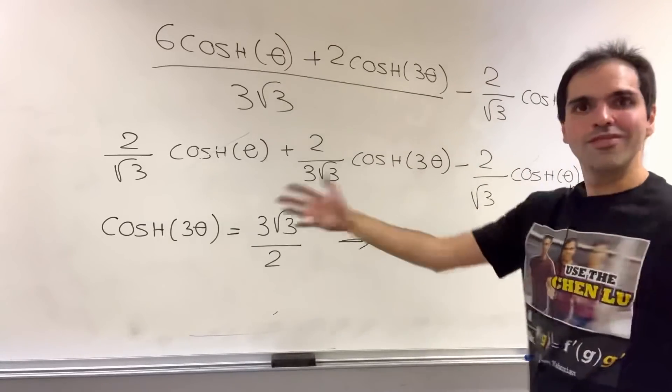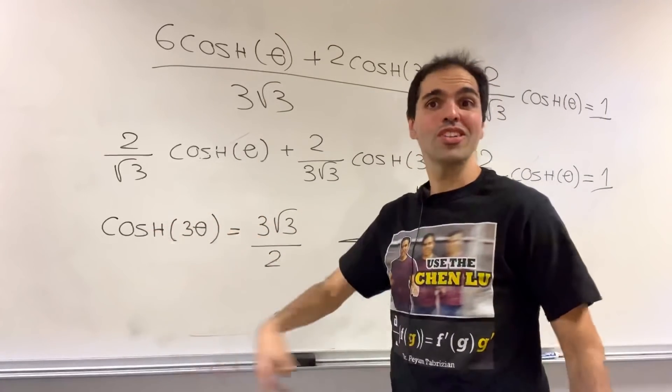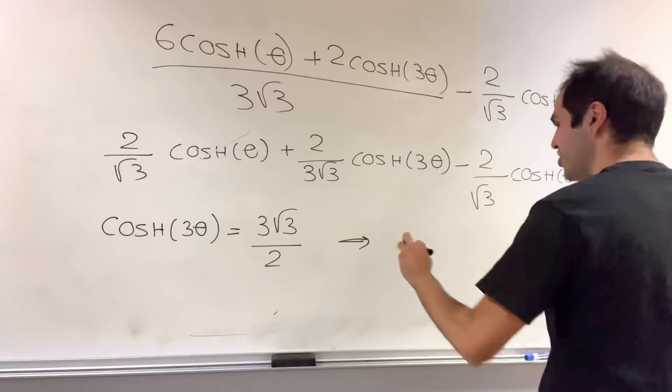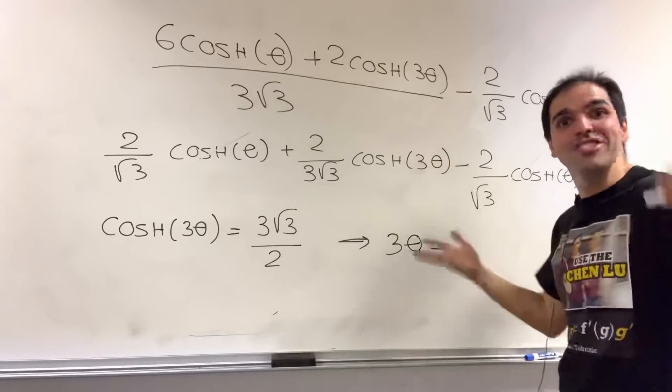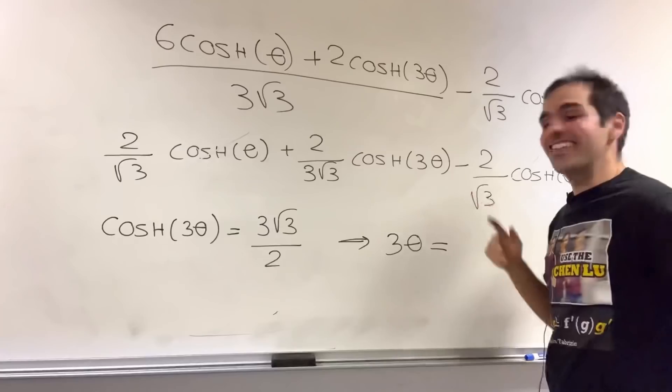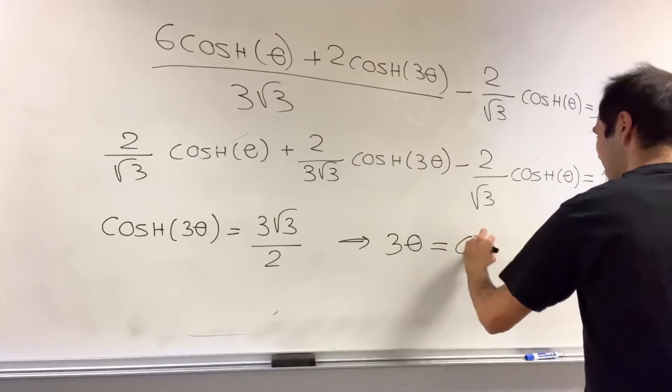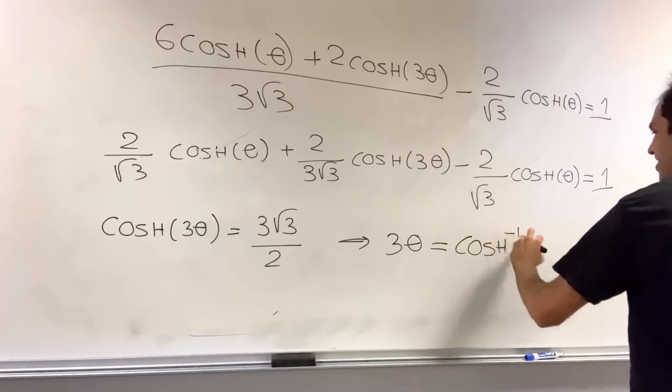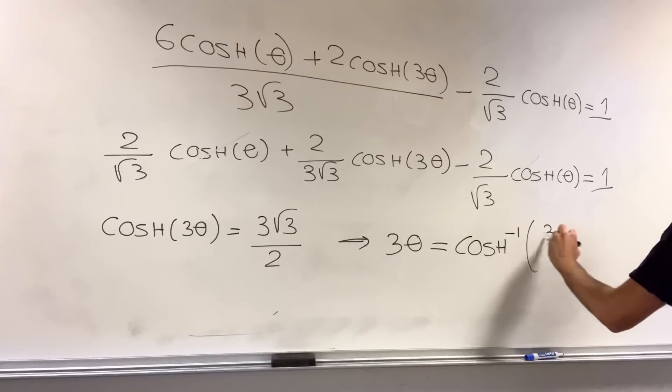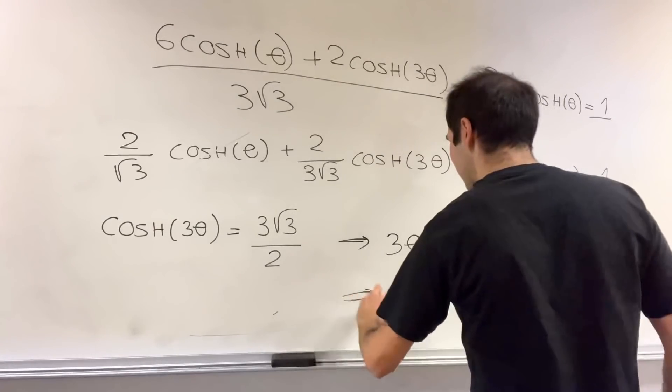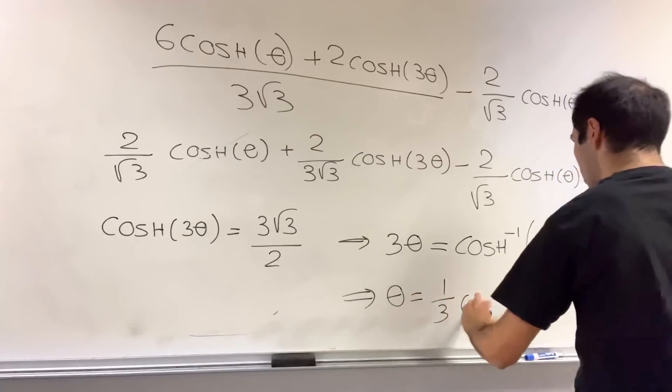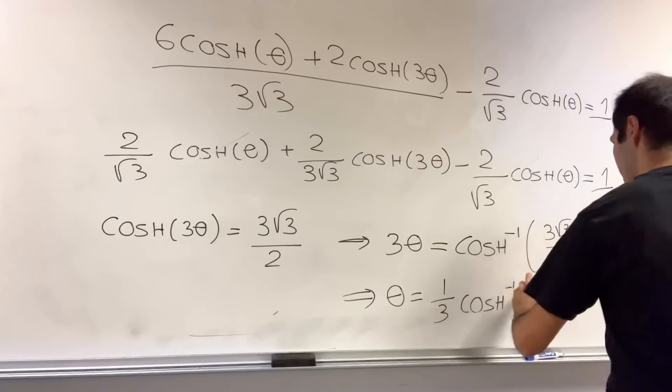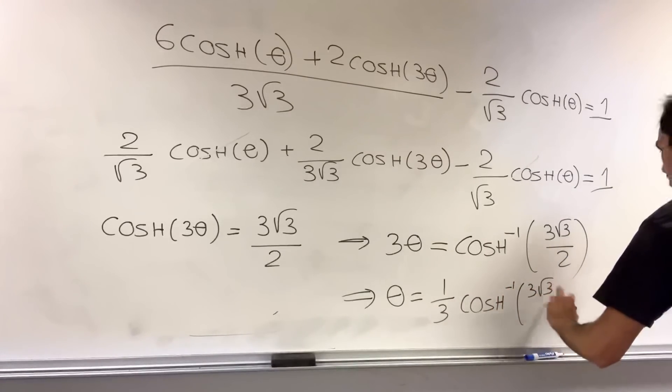So we want to undo cosh, so we'll use arc cosh. And when in life do you use arc cosh, right? Only in math, really. So arc cosh of three square root of three over two, which now tells you that theta is one-third arc cosh of three square root of three over two.